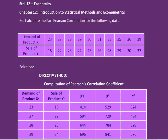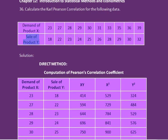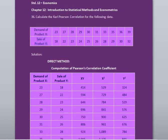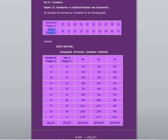Question number 36. Calculate the Karl Pearson correlation coefficient for the following data — demand of product X and sale of product Y. In this video, we shall see how to calculate R using the direct method, where it is calculated using the variables as they are.